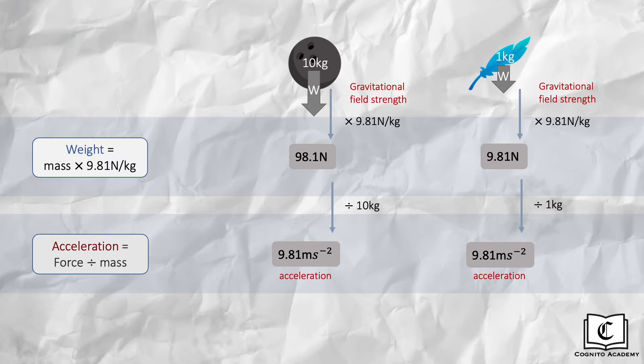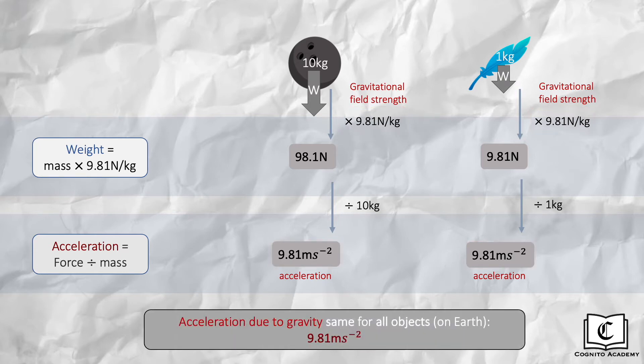Another observation is that gravitational field strength is numerically similar to acceleration due to gravity, and this is true regardless of mass or the gravitational field you are in. So now we know that acceleration due to gravity, which is the acceleration of falling objects in vacuum, is the same for all objects on Earth at 9.81 meters per second squared, which explains why the feather and the bowling ball took the same duration to fall.